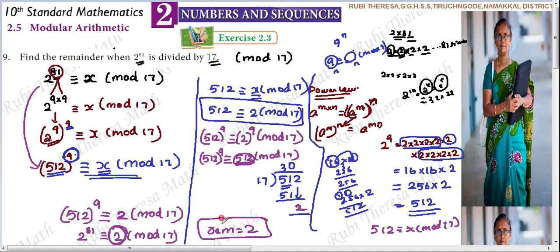So, to summarize: 2 power 81 is split as 9 into 9. Applying the power law, we get 2 power 9 the whole power 9. The value of 2 power 9 is 512. Finding the remainder of 512 divided by 70 gives 2. So the remainder when 2^81 is divided by 70 is 2.